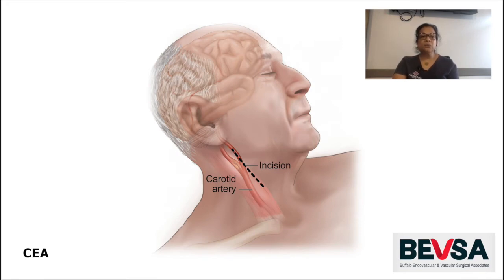Throughout the procedure, we also use neuromonitoring, which allows us to closely monitor the brain and its activity to detect any early signs of plaque breaking off and going to the brain causing a stroke. The surgery usually requires a three to four inch incision on the affected side of the artery, on that side of the neck, to expose the carotid artery.